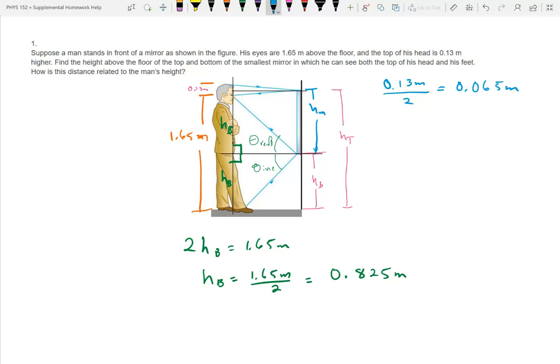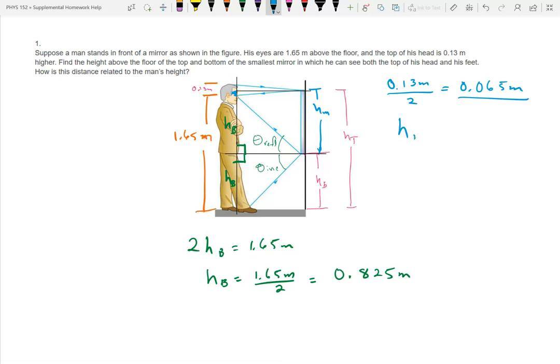Okay. So that's the distance right here. Okay. It's 0.065 meters. And then if we go over to the other side, we have the height of the top is equal to the height of the bottom, or no, I didn't do that right. The height to the top is the 1.65 meters, the distance from the floor to his eyes, plus the distance from his eyes to the top of the mirror.